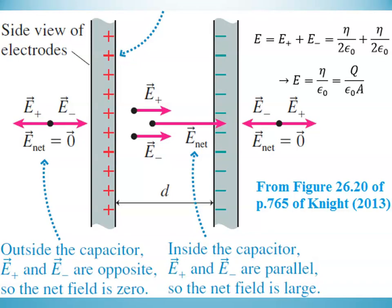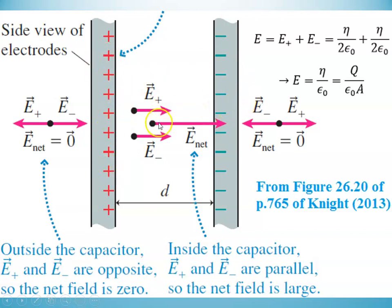Here's that picture again. The field due to the positive plate points away from it; the field due to the negative plate points toward it. Between the plates those fields add together — the positive plate on the left forces positive charges away, the negative plate on the right pulls them toward it, giving a net field to the right. Outside, the fields cancel.